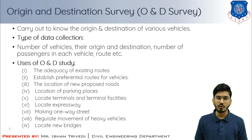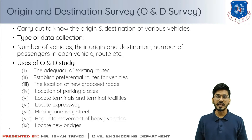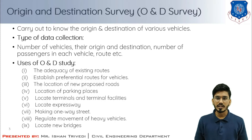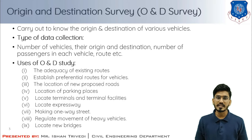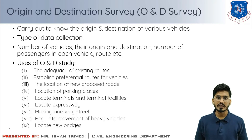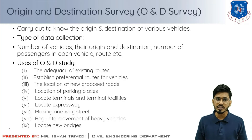Talking about the usage of OD survey, it is used to determine the adequacy of existing routes, whether any modification is needed. It is used to establish preferential routes for various categories of vehicles, to locate new proposed roads, parking places, terminals and their facilities, expressways, and to determine the necessity of one-way streets in CBD areas or near railway stations. It also helps regulate the movement of heavy vehicles and to locate new bridges as per traffic demands.